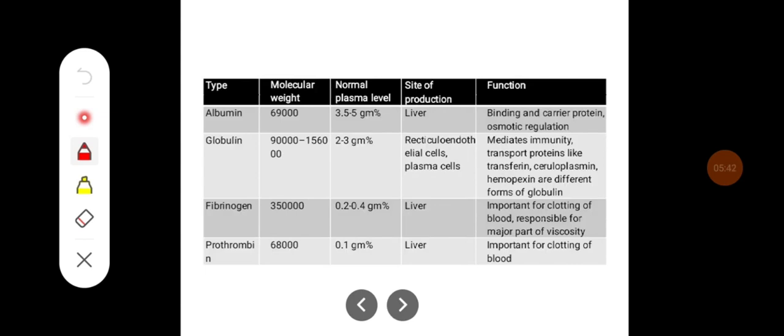Here are differences between albumin, globulin, fibrinogen, and prothrombin. The molecular weight of albumin is around 69,000, with normal plasma levels ranging between 3.5 to 5 gram percent. It is produced in the liver and functions as a binding and carrier protein, important for osmotic regulation.